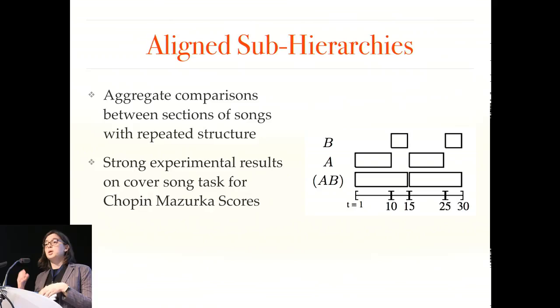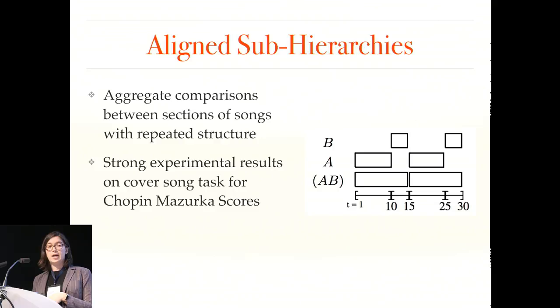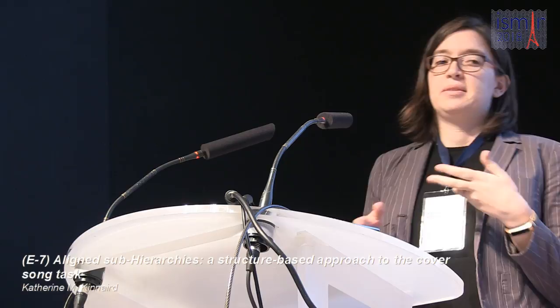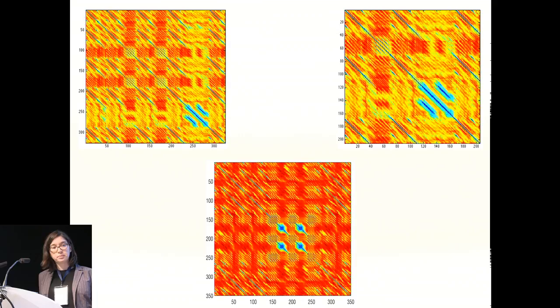We showed strong experimental results for the cover song task on Chopin Mazurkas, with two versions of each score: one where repeats were played as Chopin intended, and one where they were ignored. Since ASH requires repeats that are themselves highly repetitive, some songs had to be removed. Please come to the poster to see how we dealt with real data.